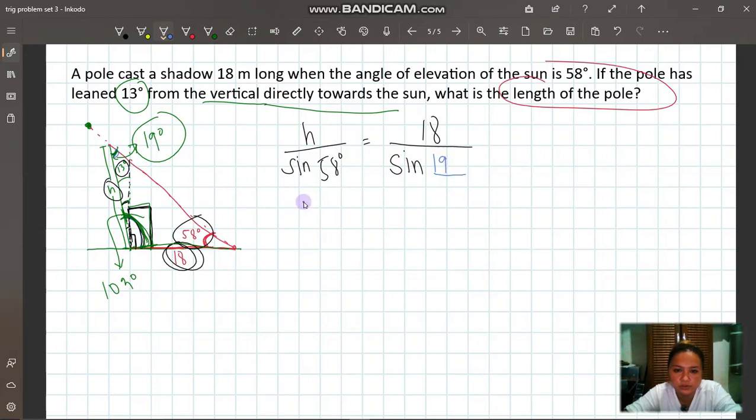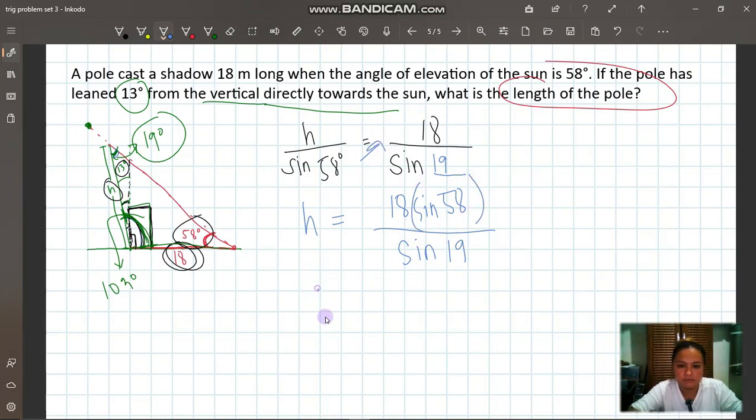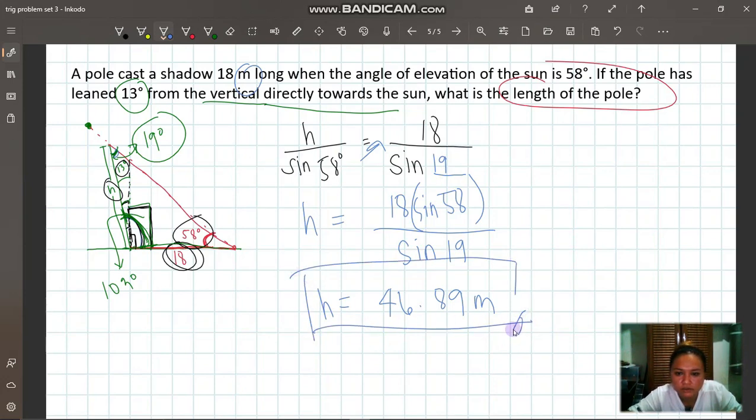So we can solve for H. What we are looking for is the length of the pole. H is equal to 18 sine 58 over sine 19. Cross multiply. Let the calculator handle it. That's 18 sine 58 over sine 19. The answer is 46.89 meters.